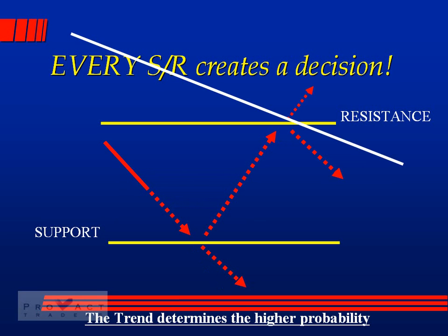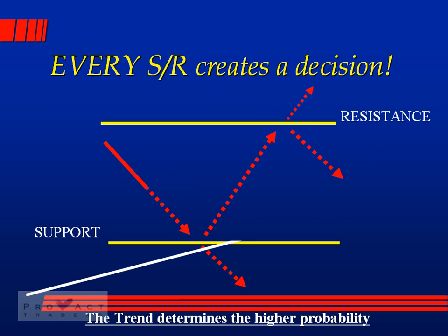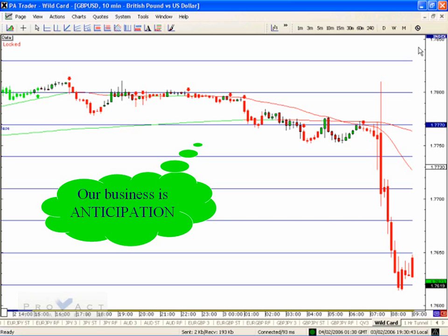In a downtrend, as the currency moves toward a resistance point, the trend tends to turn that currency — it takes a lot of money to break out of an already-established trend. In an uptrend, as the currency comes down toward the trend line, the trend gives it a higher probability of turning back up. That's why it's important to know where those points are — our business is anticipation.